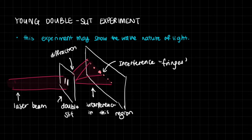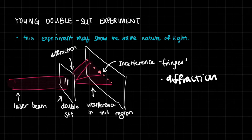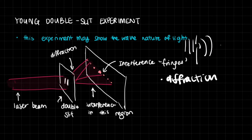Essentially, we have light that exhibits two distinct actions. The first is diffraction — the spreading out of a wave after it passes through a gap or around an edge. So if you pass light through a gap, it would spread out; if it rounds an edge, the wave would spread out. That is diffraction.